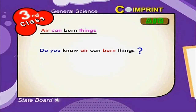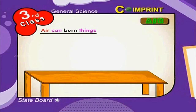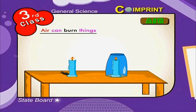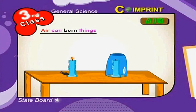Do you know air can burn things? Look at the picture. Take two candles, light them, and cover a big glass upside down over one of them. After a few minutes, the light is put off because the candle burns only as long as there is air in the glass. Once the air is used up, the fire goes off. So we can say that air is essential for things to burn.